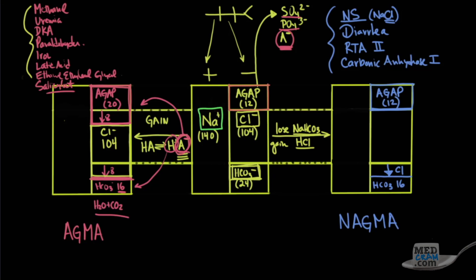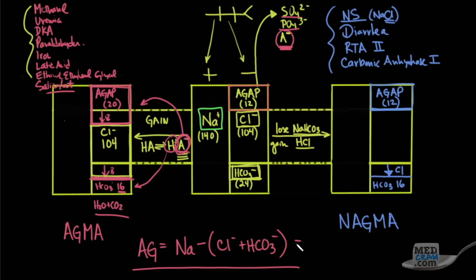The anion gap equals sodium minus (chloride plus bicarb), and the normal should be around 12 if the albumin is normal.